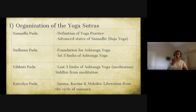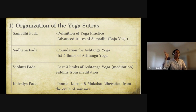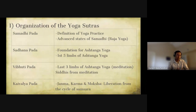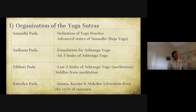Patanjali defines three types of practices: mridhu (mild), madhya (medium), and adhimatra (intense). People ask why Patanjali puts this advanced topic right in the first chapter instead of building up to it. One reason given by scholars is that this is for people who are already advanced, so they don't have to read through the other material — that's why he placed it there.